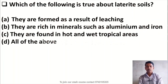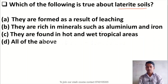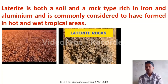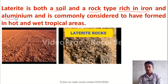Which of the following is true about laterite soil? Option A, they are formed as a result of leaching; Option B, they are rich in minerals such as aluminium and iron; Option C, they are found in hot and wet tropical areas; Option D, all of the above. The right answer is Option D — all of the above. Laterite is both a soil and rock type. It is rich in iron and aluminium and is commonly considered to have formed in hot and wet tropical areas.